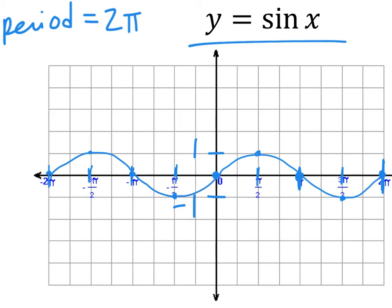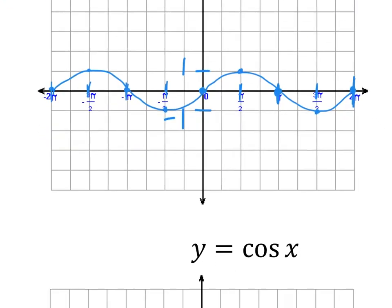Review for graphing sine: find amplitude, find period, break into half then quarters. Sine starts at zero, goes up, down, down, up. Make sure you plot the dots before drawing, because eventually you'll analyze your own graph — if it's wrong you'll have a hard time finding where it's increasing and decreasing. Please don't just freehand draw it; make the dots first.